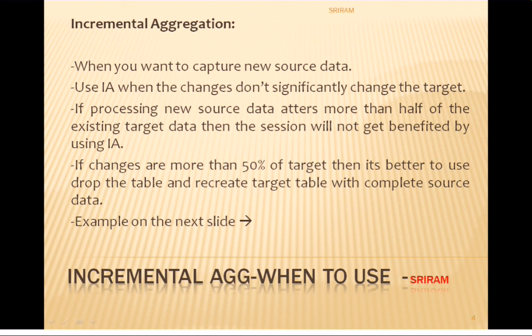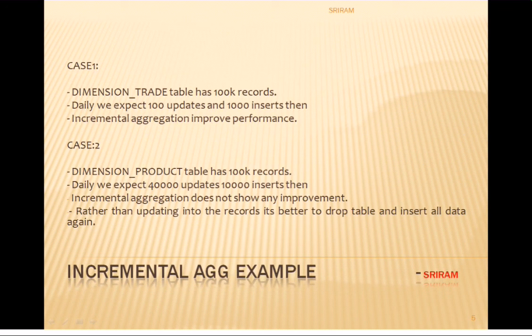Case one: the dimension trade table has 100K records. If daily we expect some hundred updates and a thousand inserts, then incremental aggregation really helps improve performance. Case two: the dimension product table has 100K records. If daily we expect 40,000 updates and 10,000 inserts, then incremental aggregation won't improve the session running time, because it is better to drop the table and reinsert since we are operating on almost the full target table.